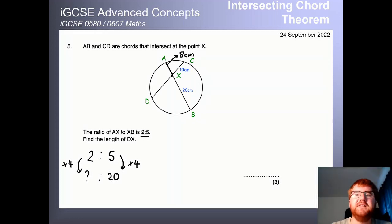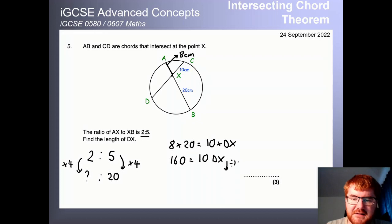So they can combine this intersecting chord theorem with a couple of other topics. And now in order to work out DX here, we're going to do that same relationship. So 8 times 20. So this first chord here is equal to 10 times DX. And now it's just a little bit of algebra to go through here to get to the final answer. So 8 times 20 is 160. And it's going to be 10 lots of DX. And then to get the DX on its own, we divide by 10 on both sides. What's the opposite of timesing by 10? Dividing by 10.